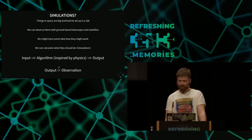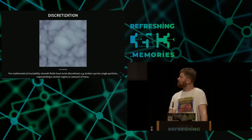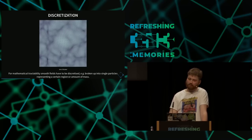We need one more step for simulations: we need to discretize our problems. We have some continuous field, and to describe it we discretize it into a finite number of elements. For example, we can use particles of the same mass if we interpret this as a density field. Where it's denser we have more particles per unit area, and where it's less dense we have fewer. Our simulations only deal with the particles — they only see how these particles interact.